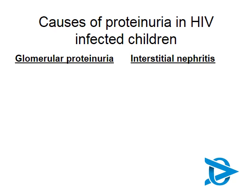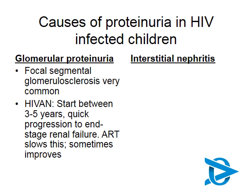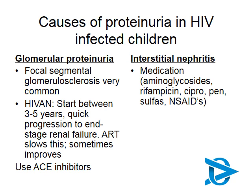Looking at causes of proteinuria in HIV-infected children, the most common cause is still focal segmental glomerulosclerosis, as we see in HIV-negative children. But we do see HIVAN — HIV-associated nephropathy — in children. It can start between the ages of three to five years and can have very quick progression to end-stage renal failure in children who have not yet been started on ARVs. ARVs can certainly slow down and improve the progression, which is another reason why we must start children on ARVs very early in life. ACE inhibitors are usually used in these scenarios.